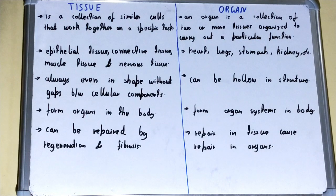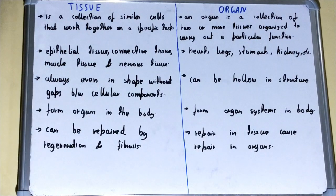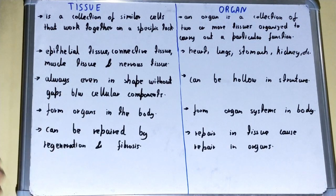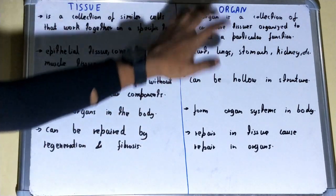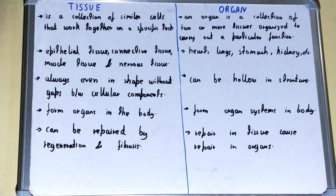In the case of tissue, cells are even in shape with no gaps between cellular components — they are evenly distributed. But in the case of an organ, the structure can vary because it includes two or more different kinds of tissues arranged to provide a function to the body.